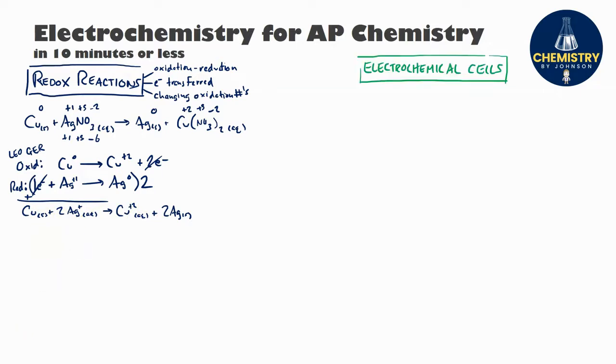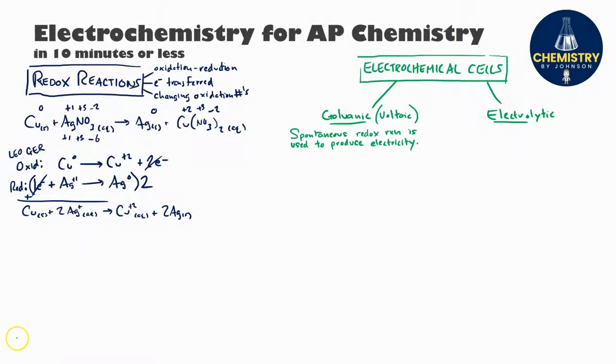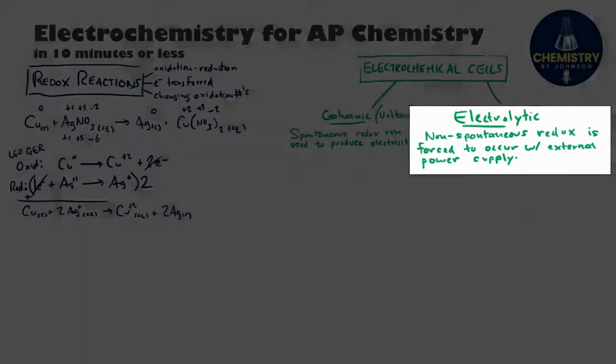Now we can use these redox reactions to create something called an electrochemical cell. For AP Chemistry, we're going to group these into two general types: the first is galvanic or voltaic cells, and the second type is electrolytic cells. In galvanic or voltaic cells, you'll take a spontaneous redox reaction that happens on its own and use that to produce electricity—that's where batteries come into play. Electrolytic cells are the opposite. You'll take a non-spontaneous redox reaction that would not happen on its own but will use an external power supply to force it to take place.